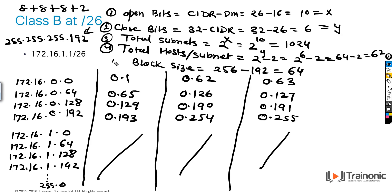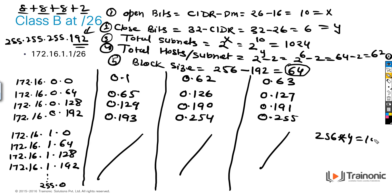Block size: 256 minus 192 equals 64. /26 is the combination of 8+8+8+2, and when 2 bits are on the value is 192. Since /26 belongs to the 4th octet, values change as 0, 64, 128, and 192 — giving 4 subnets per block. Total subnets are 1024, valid hosts per subnet are 62, for example 1 to 62 or 65 to 126. This was our subnetting of Class B at slash 26. Thank you.